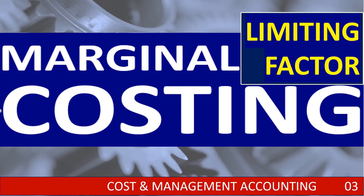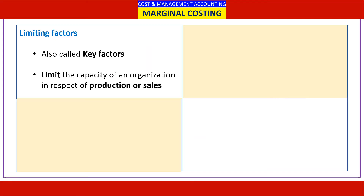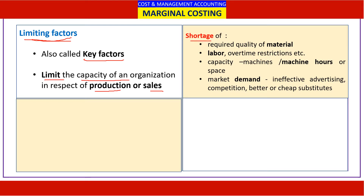Namaste and welcome to this presentation on limiting factors as a part of marginal costing. Limiting factors are constraints a business faces; because of their impact on the profit of the company, they become key factors. Limiting factors effectively limit the capability of an organization to maximize production or sales, which in turn affects the overall profitability. Limiting factors need special attention and are expressed in the form of shortages.